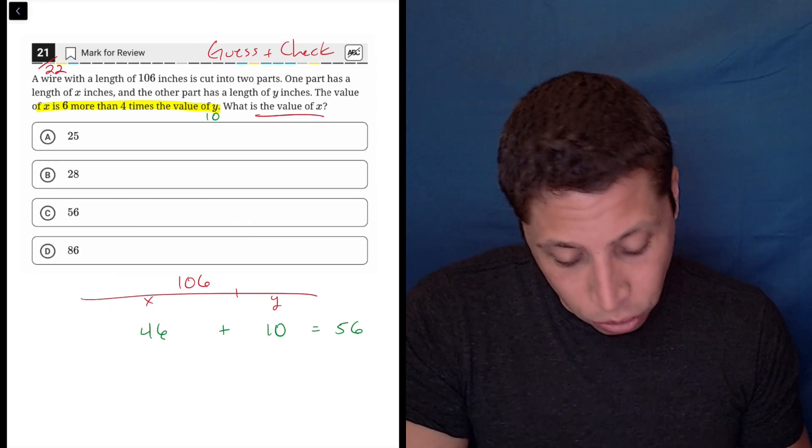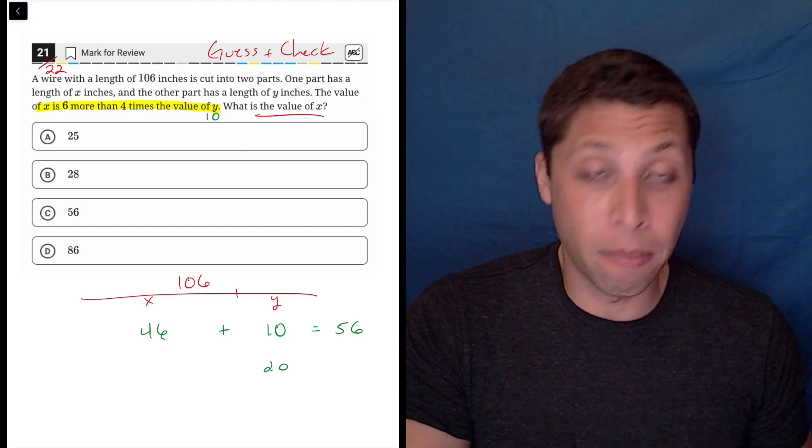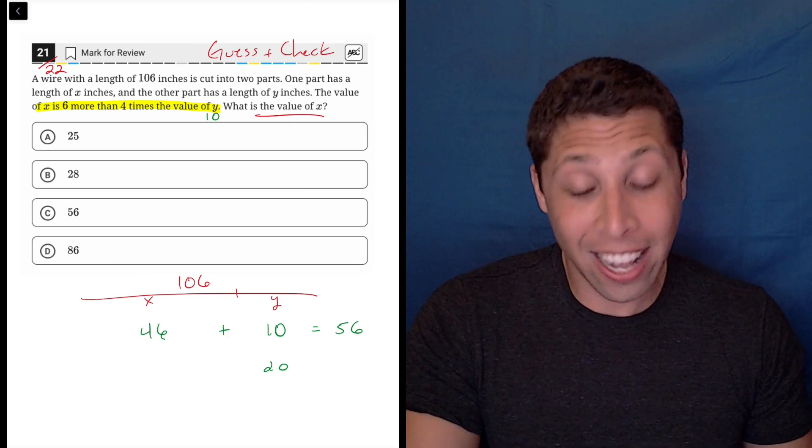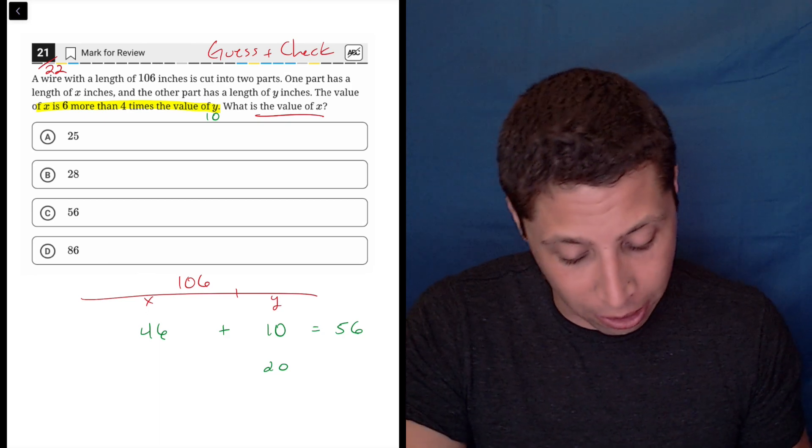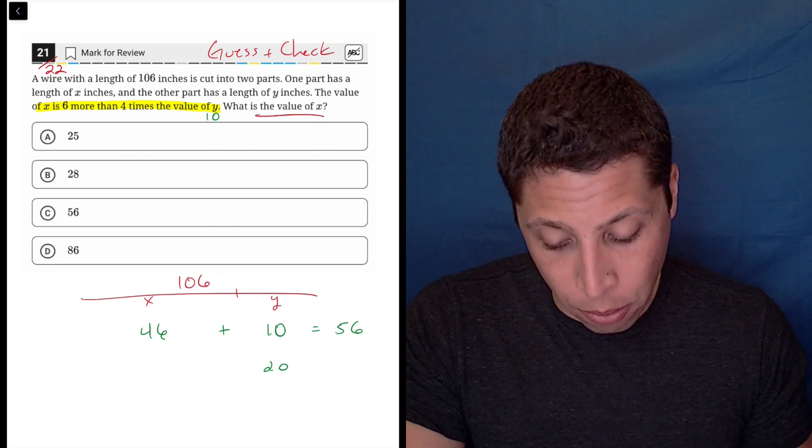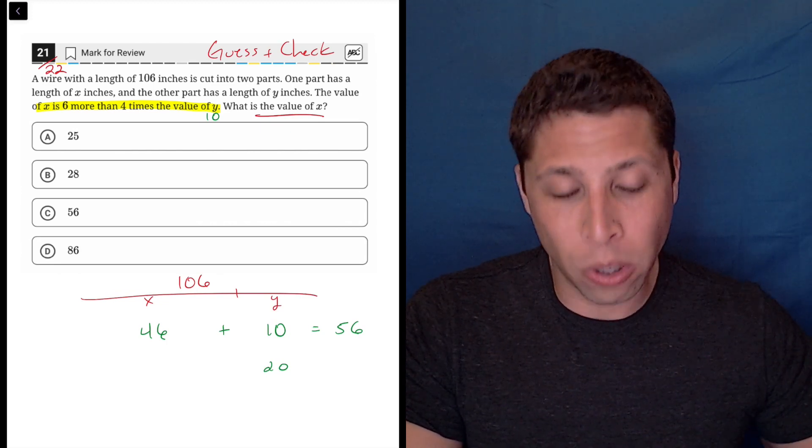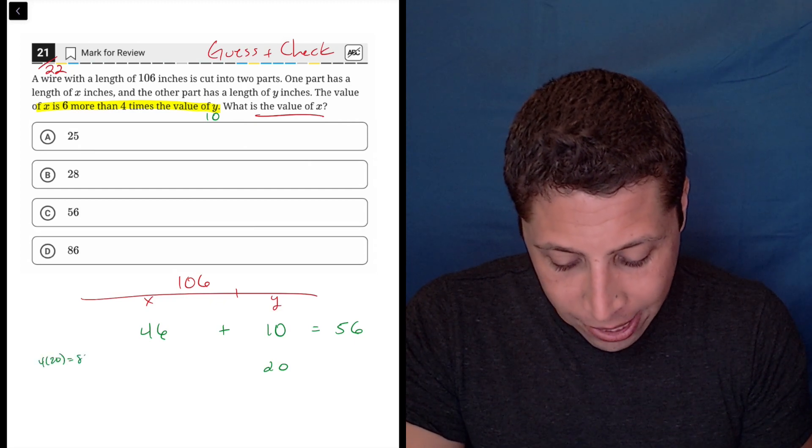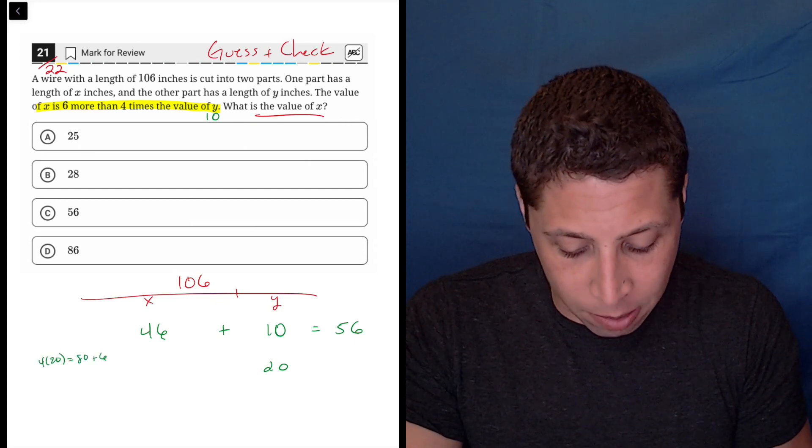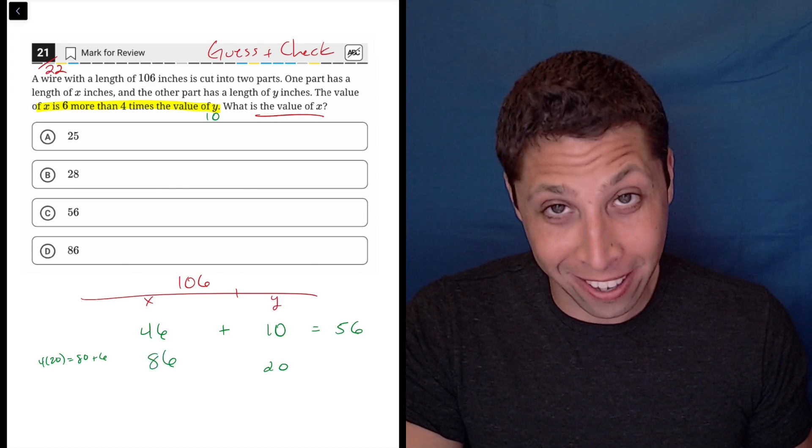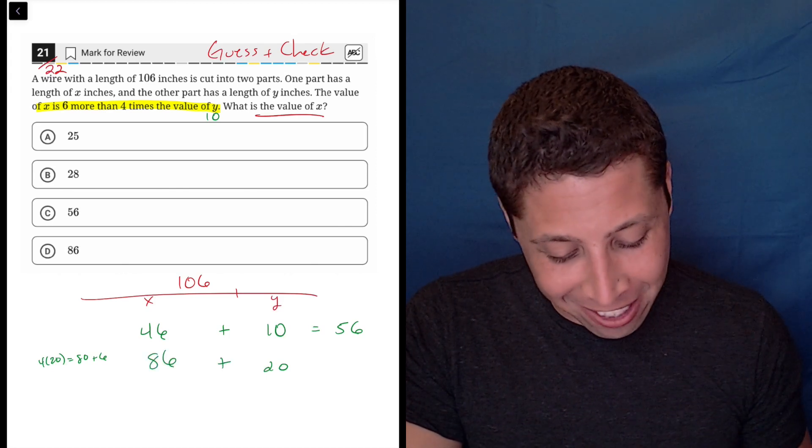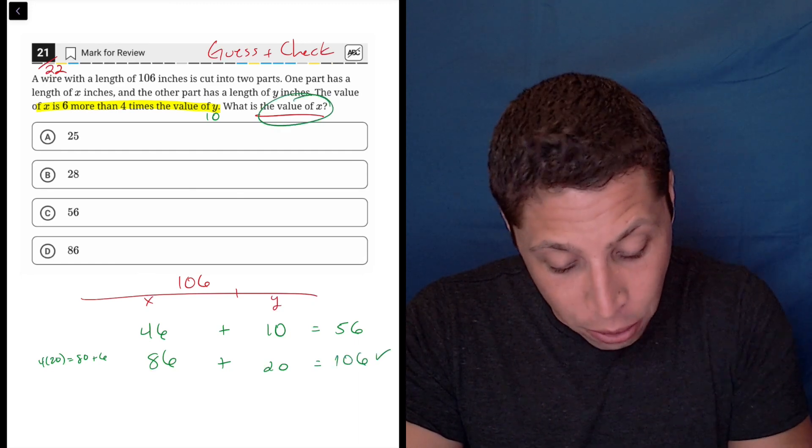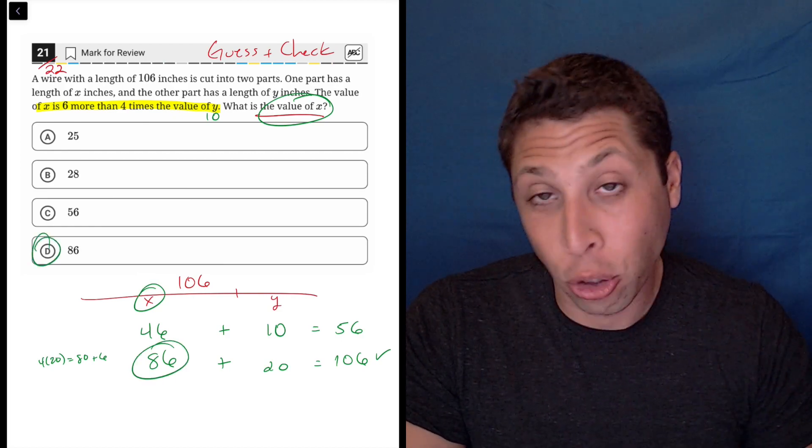But let's try another number for Y. Let's try 20, let's up it a little bit. Because 56, it's not exactly half of 106, but it's close and maybe we double it, we'll get closer. So okay, same rules now. X is six more than four times 20. Well, four times 20 is 80 and then six more than that is 86. What do you know? 86 plus 20 is 106. So that checks out. So what's the value of X? The value of X is 86, choice D.